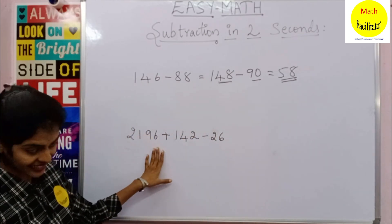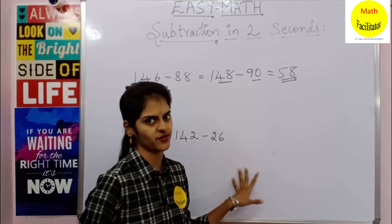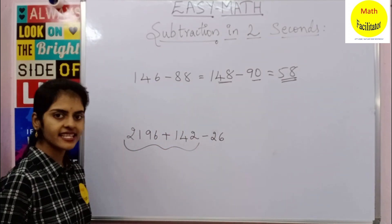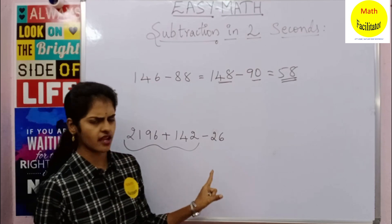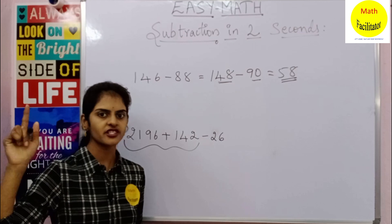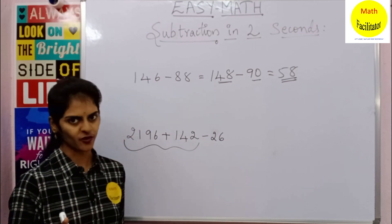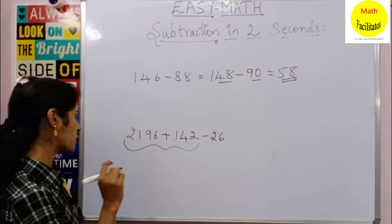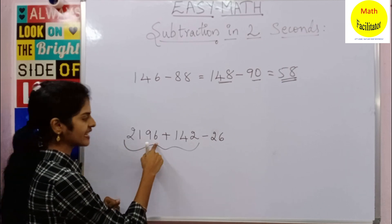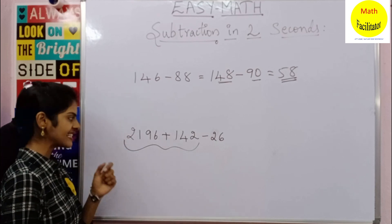Moving on to the next question, it is 2196 plus 142 minus 26. Firstly, let us add these two numbers. How to add these numbers I have given in the part 1 and part 2 videos, earlier videos. If you have not watched, do go and watch so that you can add easily. Coming back to this problem, 2196 plus 142.